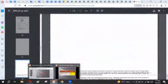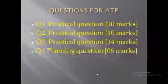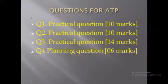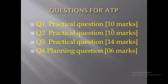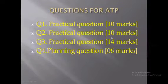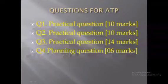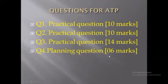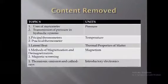Let's come back to the slides. These are the major question types in alternative to practical (ATP). Question 1 is a practical-based question worth around 10 to 11 marks. Questions 2 and 3 are also practical-based — question 2 is 10 marks and question 3 is around 13 to 14 marks. The planning question is around 6 to 7 marks. That is all about paper four.